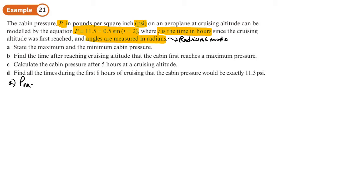Part A, we want to find the maximum pressure and the minimum pressure. Now when are we going to get the maximum pressure? Let's have a look at the equation. It's 11.5 minus something. Let's have a look at the second bit of the equation. You're going to be minusing that. Now, if I look at this part here, sign of something. Sign of anything can only go up to one and down to negative one. That's all the sign can do.